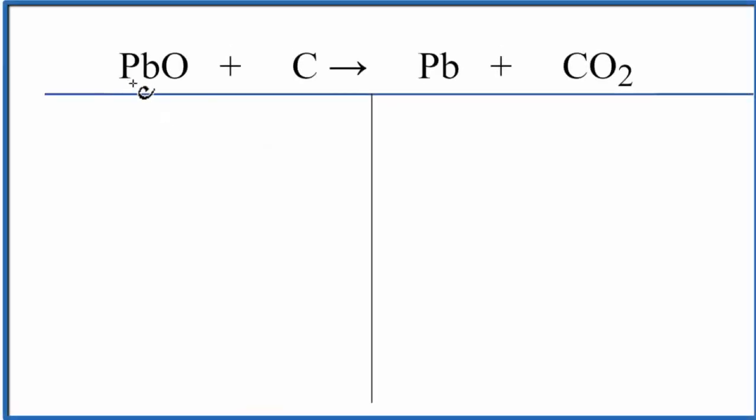In this video, we'll balance the equation PbO plus C yields Pb plus CO2. That's lead 2 oxide plus carbon. Let's add the atoms up.